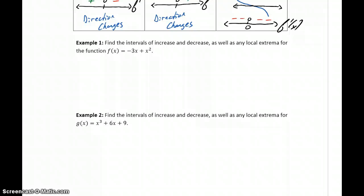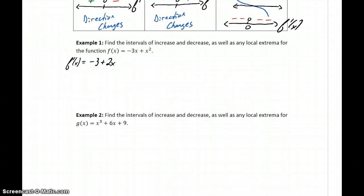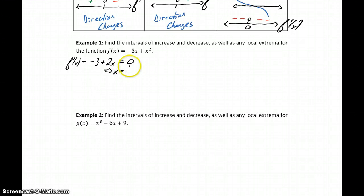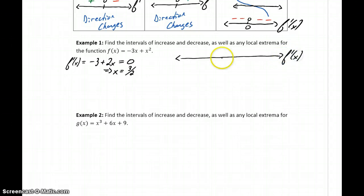In example one, we want to find the intervals of increase and decrease as well as any local extrema for the given function. The first thing we need to do is find f prime of x, which would be negative 3 plus 2x. Then we need to determine where this function is either equal to zero or undefined. We're dealing with a polynomial function, so it's defined for all values of x, but setting it equal to zero gives us x equals 3 halves as our single partition number. We'll choose test points above and below that value to determine what's happening with our derivative.